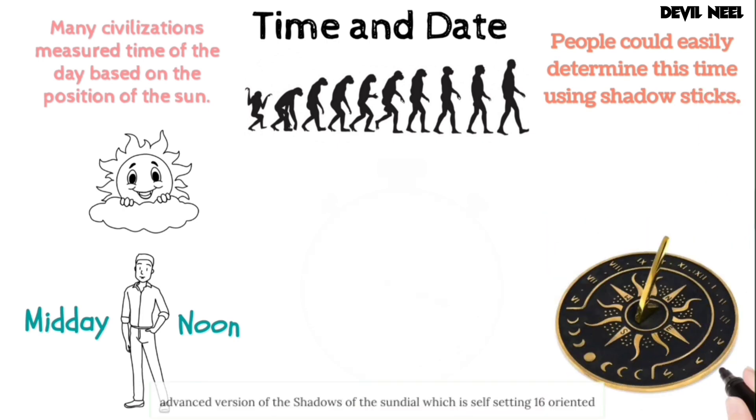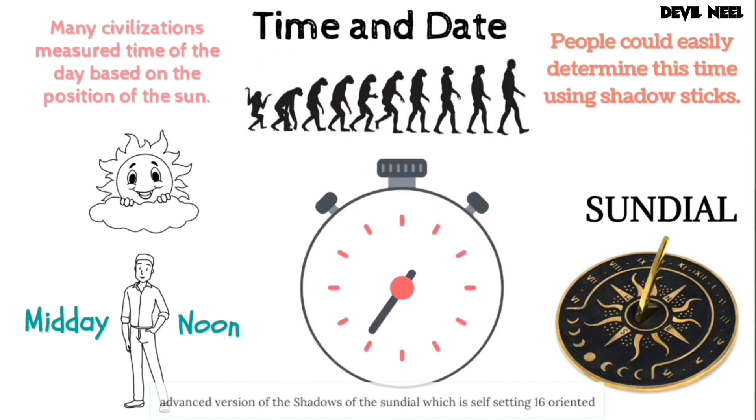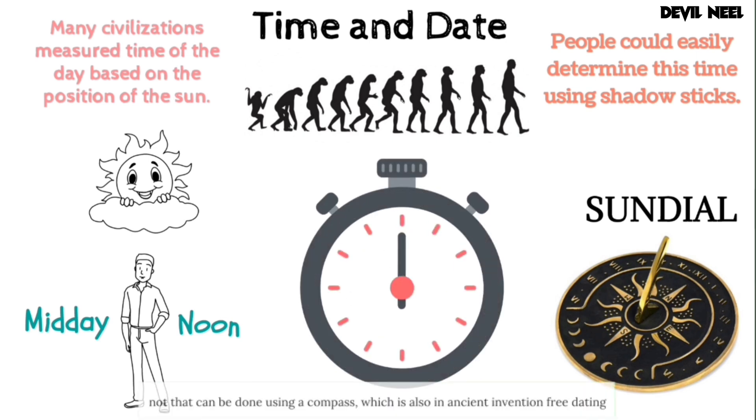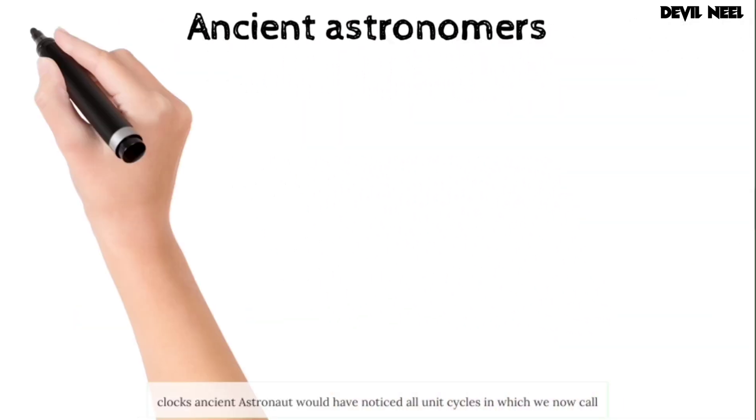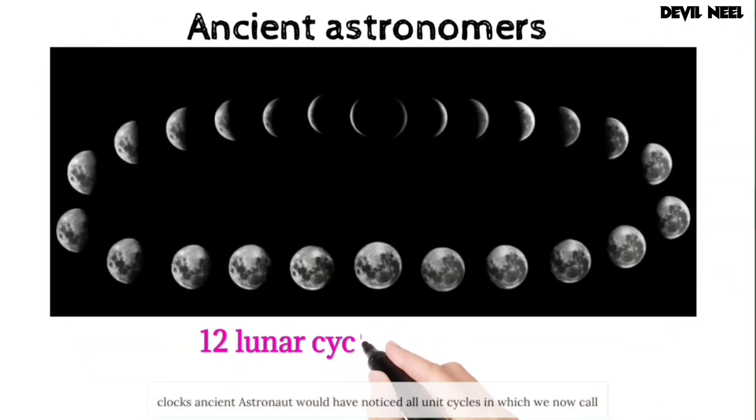A slightly more advanced version of the shadow stick was the sundial, which is self-setting once it's oriented north. That can be done using a compass, which is also an ancient invention, predating clocks.